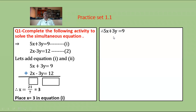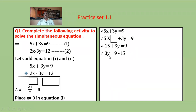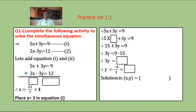Equation 1 is 5x plus 3y is equal to 9. Therefore, 5 times 3 plus 3y is equal to 9. So 15 plus 3y is equal to 9. Therefore 3y is equal to 9 minus 15, giving 3y equals minus 6. So y is equal to minus 6 upon 3, which equals minus 2.